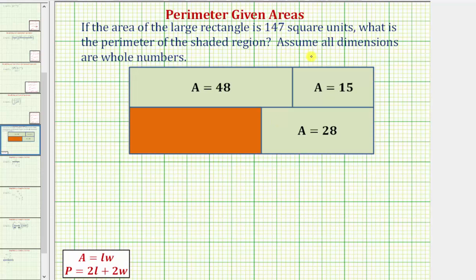If the area of the large rectangle shown below is 147 square units, what is the perimeter of the shaded region — the perimeter of this orange rectangle? Assume all dimensions are whole numbers.